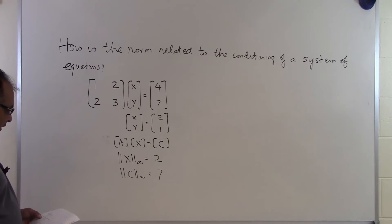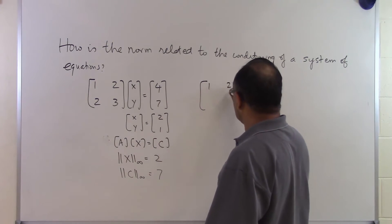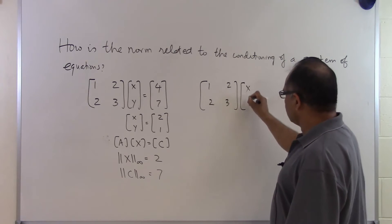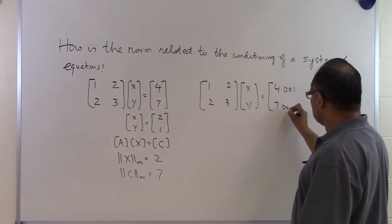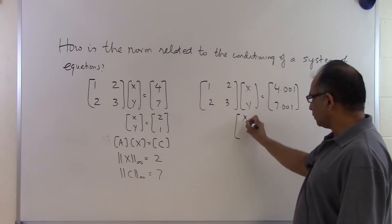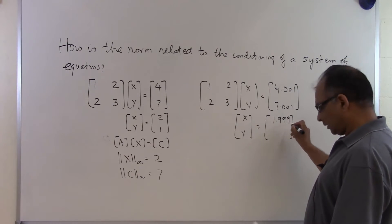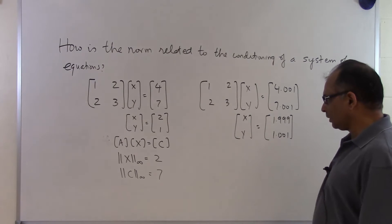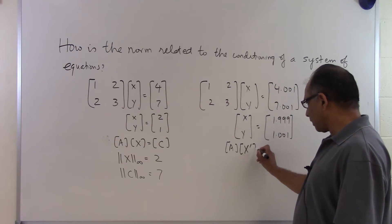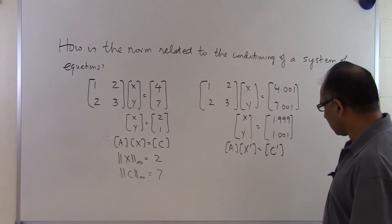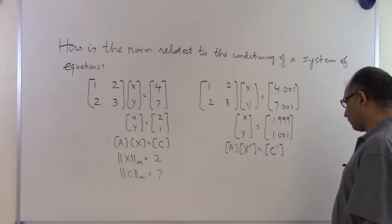Now let's make a small change in the right-hand side vector and see what happens. If we change the right-hand side from [4, 7] to [4.001, 7.001], we find the solution by any means and get X prime equal to [1.999, 1.001], which seems close to (2, 1). This is AX prime equal to C prime — changing C a little gives a different solution X prime.